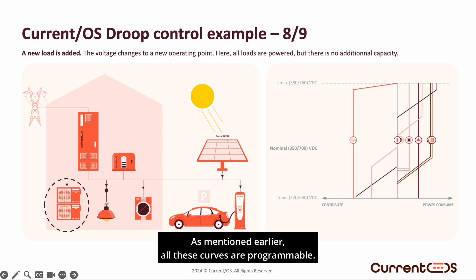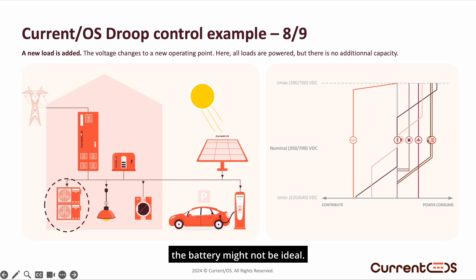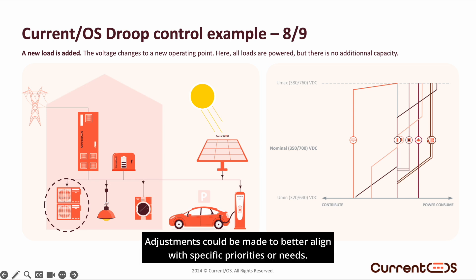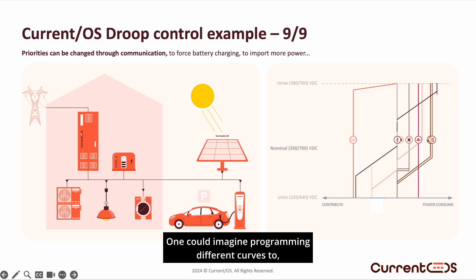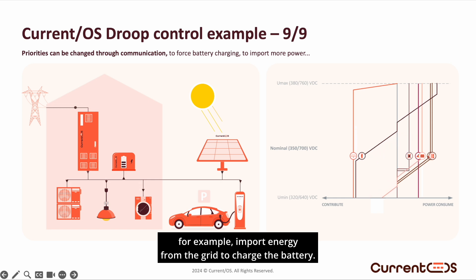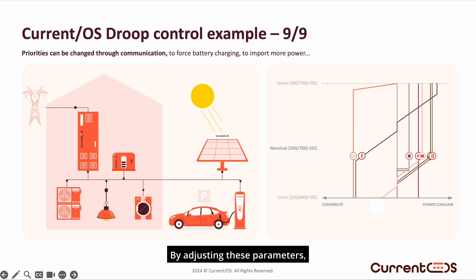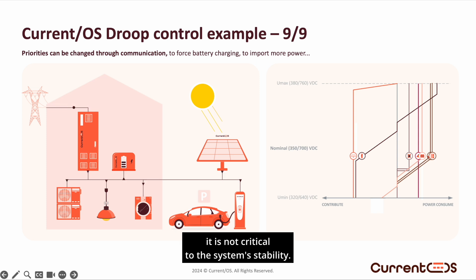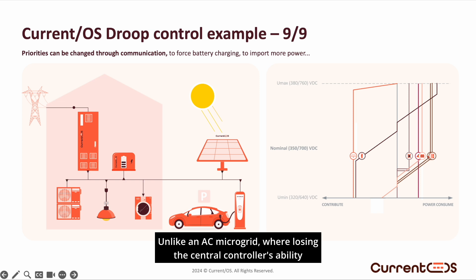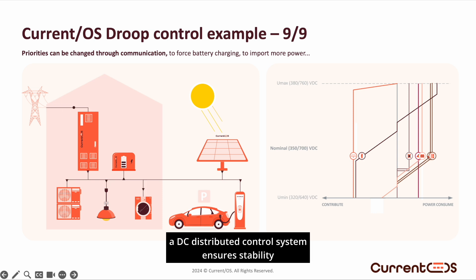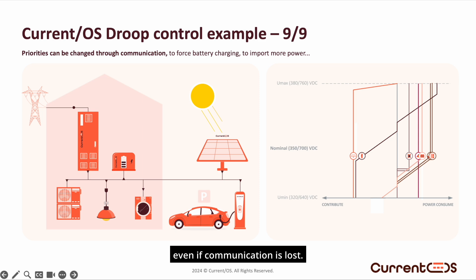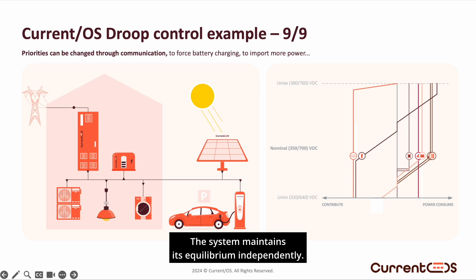As mentioned earlier, all these curves are programmable. In this example, not being able to recharge the battery might not be ideal — adjustments could be made to better align with specific priorities. One could imagine programming different curves to, for example, import energy from the grid to charge the battery. While communication is used to modify these parameters, it is not critical to the system's stability. Unlike an AC microgrid, where losing the central controller's ability to manage current sensors, contactors, or converters can lead to instability, a DC distributed control system ensures stability even if communication is lost. The system maintains its equilibrium independently.